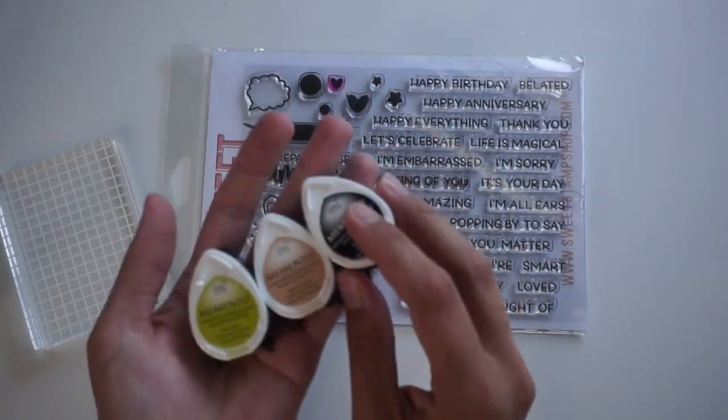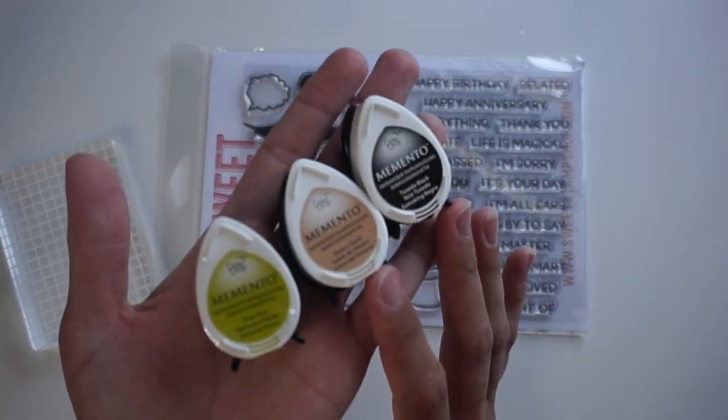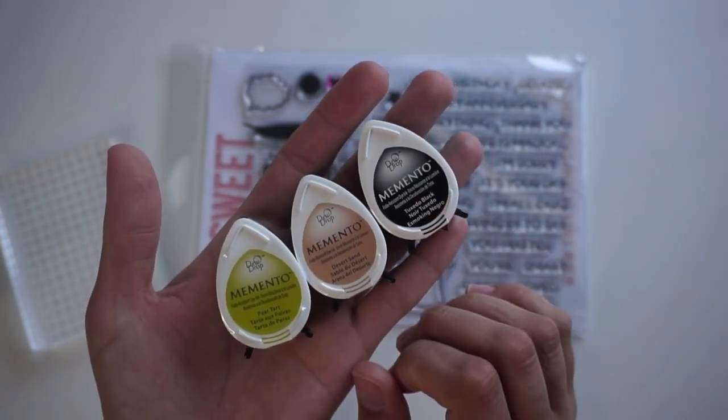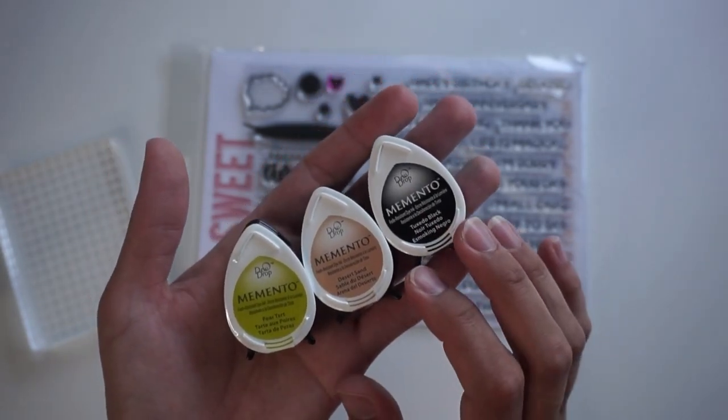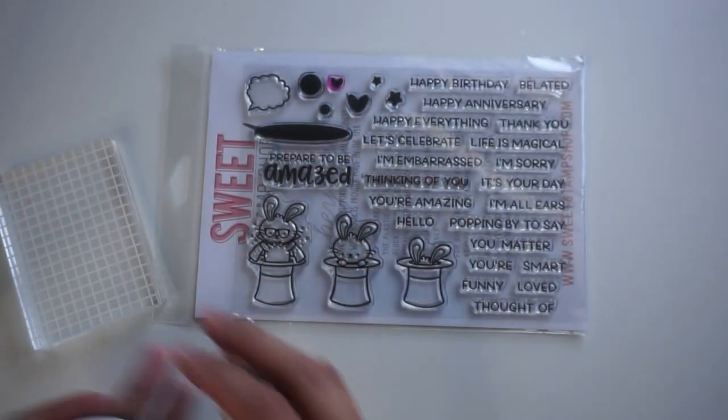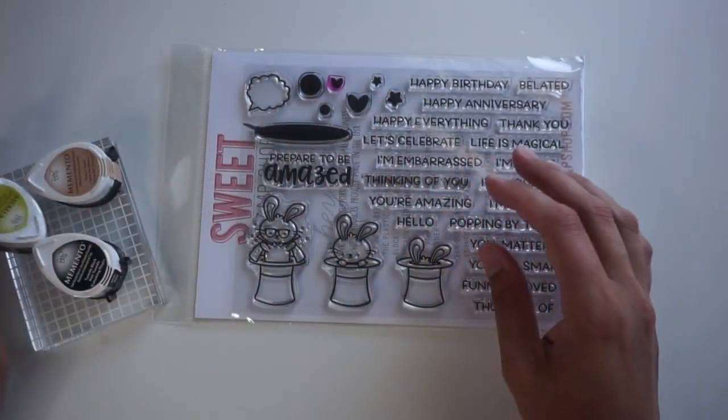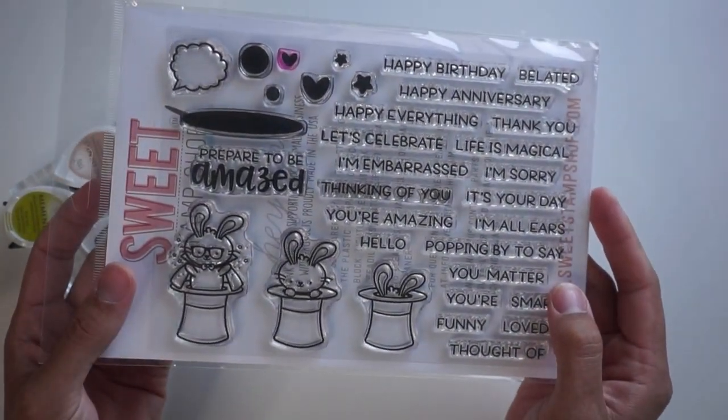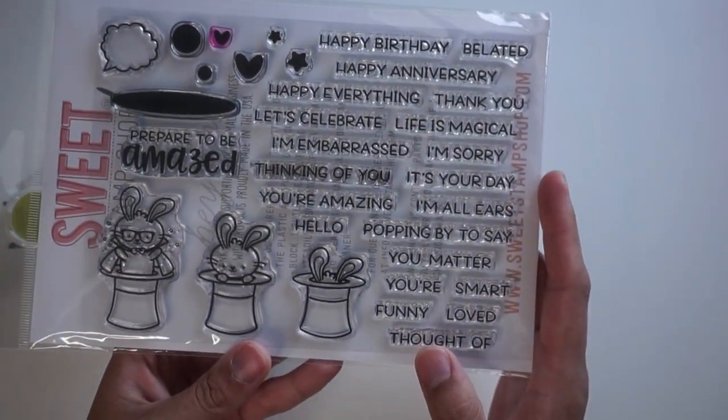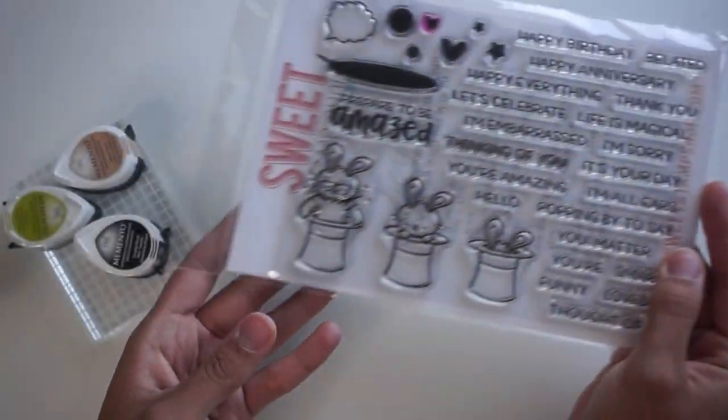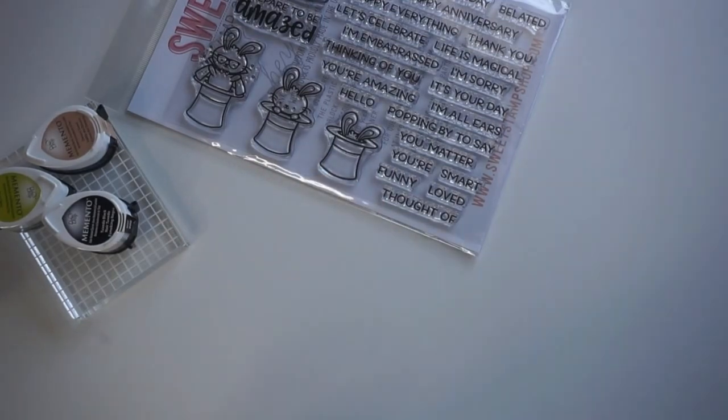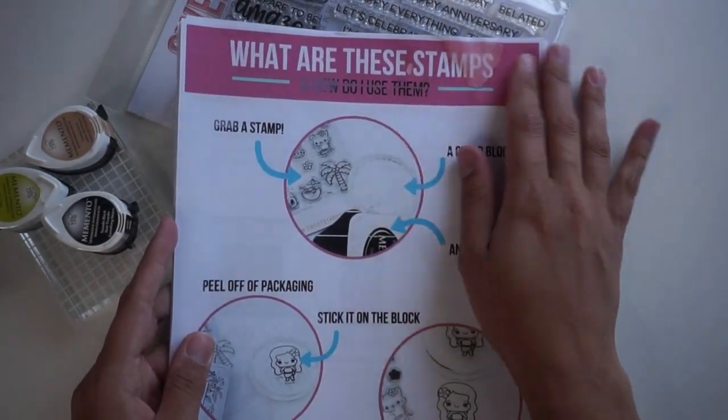So of course you get this beautiful stamp set, you get an acrylic block which we'll talk about in a little bit, and you get these three memento inks. And this memento tuxedo black is what I use and what most stampers that I know use all the time for Copic coloring with alcohol markers. And this is the stamp set that you get. It's really great. It has some really cute little images and some really great sentiment stamps as well.